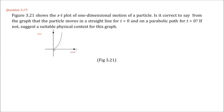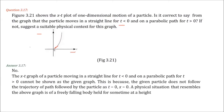An x-t plot shows a particle in one-dimensional motion. It is not correct to say the particle moves in a straight line for t < 0 and on a parabolic path for t > 0, because the x-t graph does not show the trajectory in space. A suitable physical context for this graph is an object falling freely from a certain height.